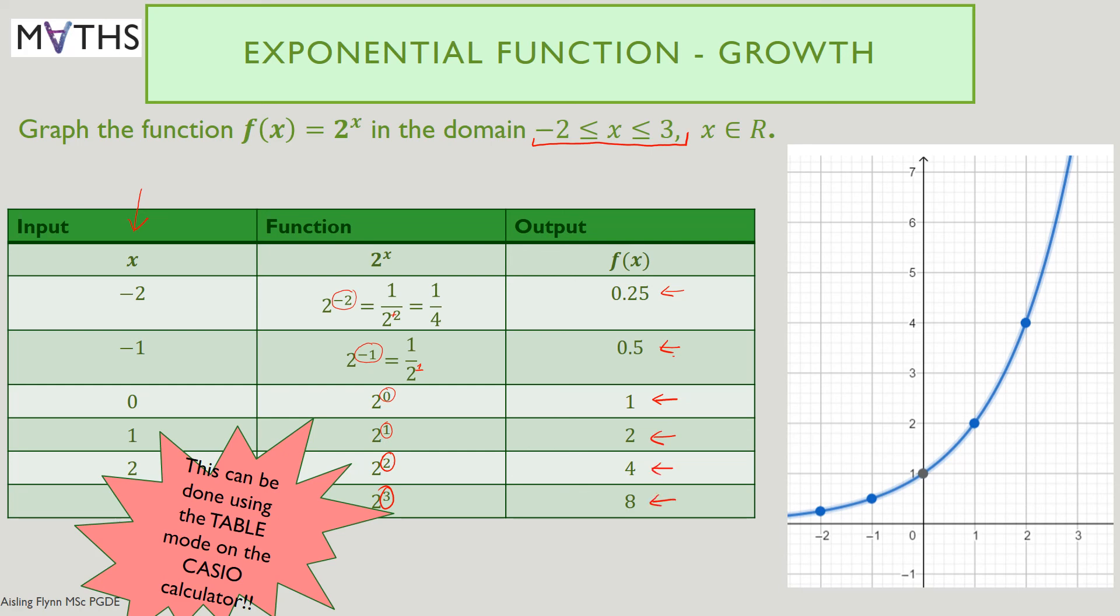This is the graph of that function f(x) = 2^x. Let's see it graphed. When the input is minus 2, the output was 0.25 a quarter. When the input was minus 1, we had a half. Notice this point here. Any function of this nature will pass through the number 1 on the y-axis. Why? Because when x is 0 and x was the power, anything to the power of 0 is 1. That will be useful in some of our questions later on. Then we had 1, 2 and we had 2, 4 and so on. The next slide shows how to generate that table on your Casio calculator.